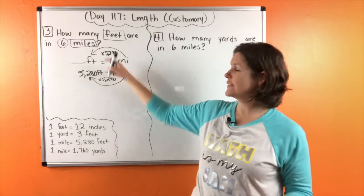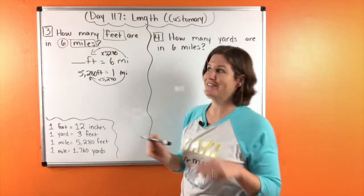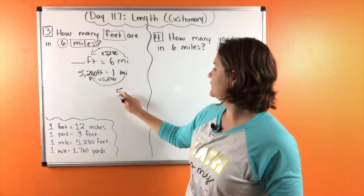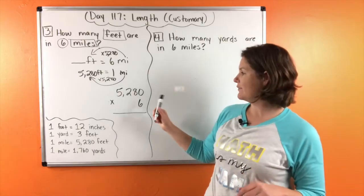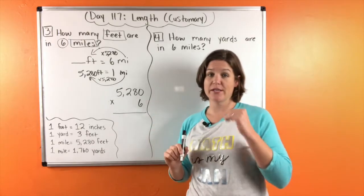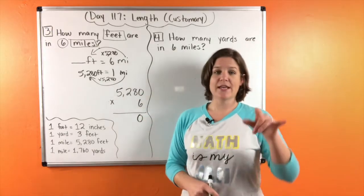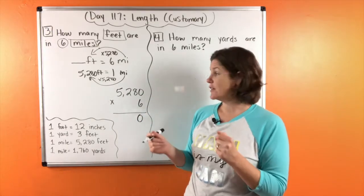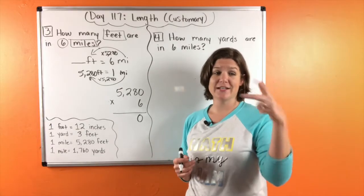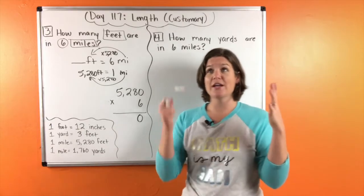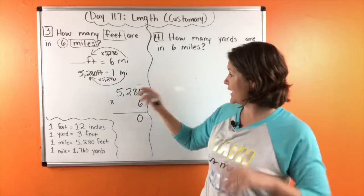And six times 5,280 is... Just kidding. We need to go ahead and solve it down here. When you're ready. We have six times zero is six. Six times eight is 48.